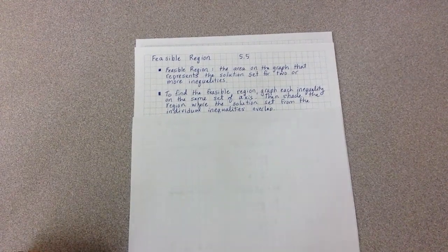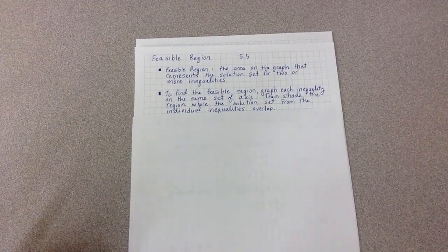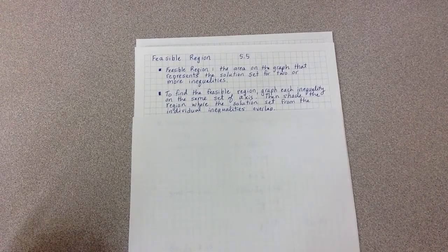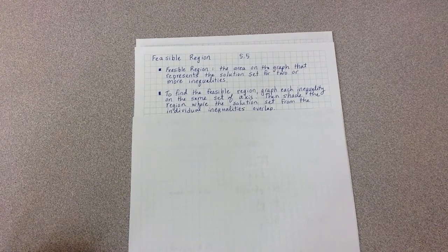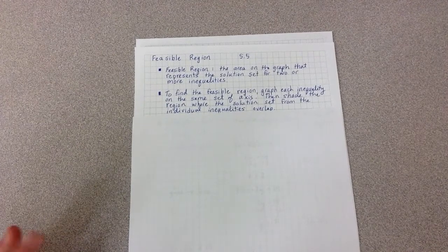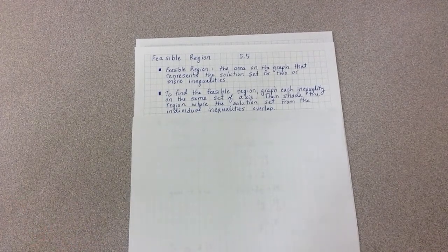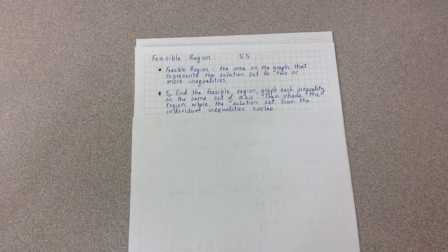These are the notes for feasible region, which is the topic covered in section 5.5. First, a definition. A feasible region is the area on the graph that represents the solution set for two or more inequalities.